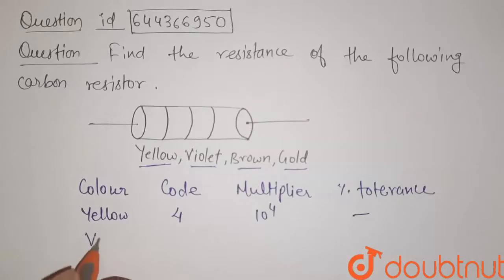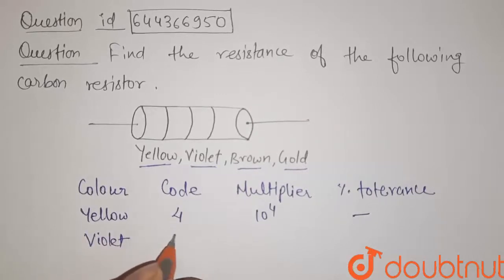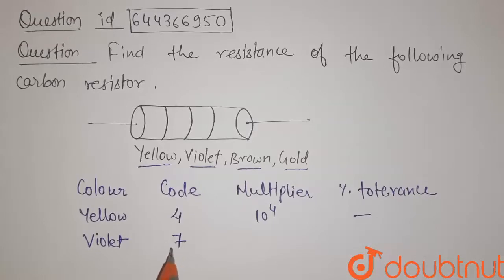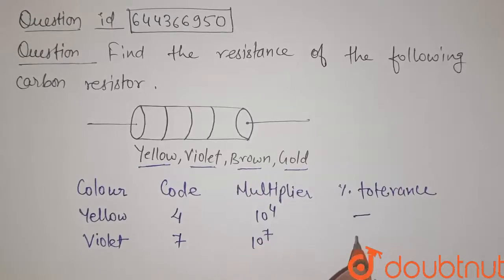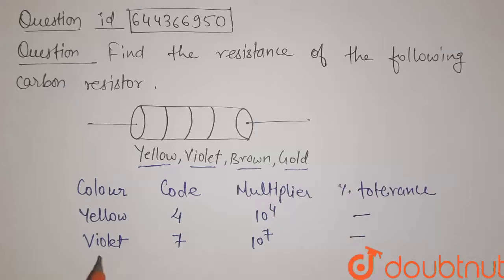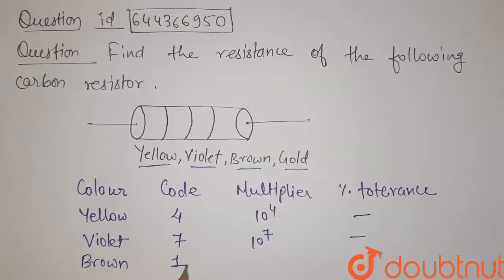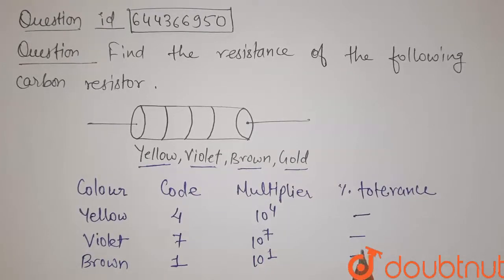The second color is violet. The code for violet is 7, the multiplier is 10 to the power 7, and tolerance is not specified. For brown, the code is 1, the multiplier is 10 to the power 1, and percentage tolerance is not specified.